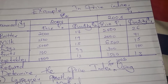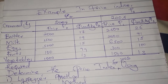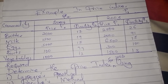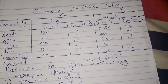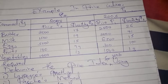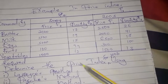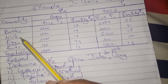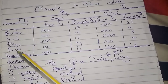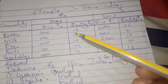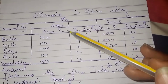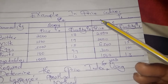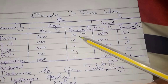We are going to look at an example on price indices with weights using weighted methods. In this question, they gave us commodities: butter, milk, eggs, fruits, and vegetables. They also gave us two years, 2004 and 2005, along with the prices for each year.